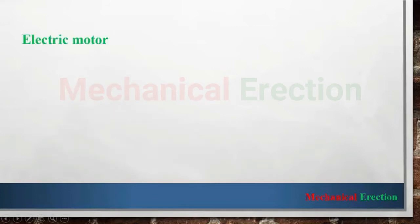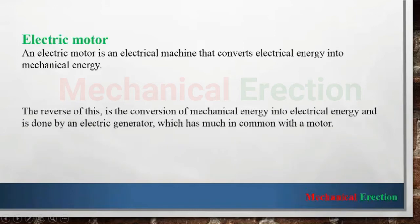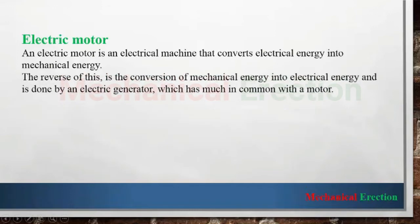So first, what is an electric motor? An electric motor is an electrical machine that converts electrical energy into mechanical energy. The reverse of a motor is a generator, where mechanical energy is converted to electrical energy. That means a motor is just the opposite of a generator and vice versa.